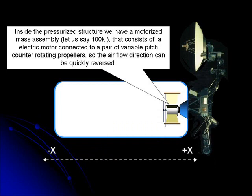Inside the pressurized structure, we have a motorized mass assembly that consists of an electric motor connected to a pair of variable pitch counter-rotating propellers so that the airflow direction can be quickly reversed.